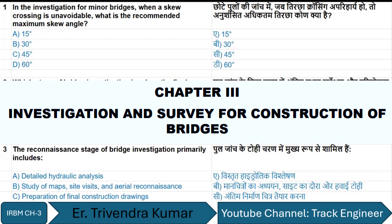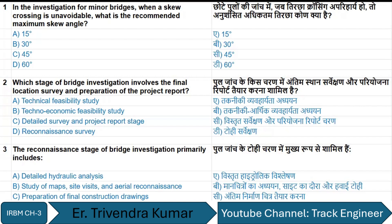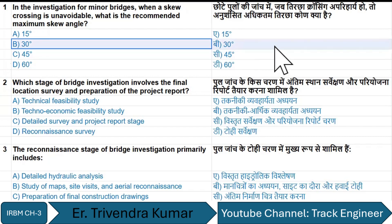The first question is: in the investigation for minor bridges, when a skew crossing is unavoidable, what is the recommended maximum skew angle? The answer is 30 degrees.